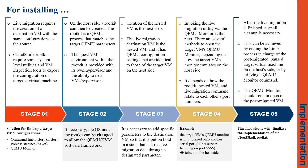Then, a rootkit can be created. The guest VM environment within a rootkit is provided with its own hypervisor and the ability to nest VMs. If necessary, the OS under the rootkit can be changed. The third step is creation of a nested VM. The live migration destination VM is nested, and specific parameters must be appended so that it is paused in an incoming state and listening for migration data. The fourth step is invoking the live migration utility using the QEMU monitor. There is a simple method to open the target VM's QEMU monitor depending on how it is emulated. For example, if the target VM's QEMU monitor is multiplexed on a serial port, such as a telnet server listening on a special port, then telnet on the host side could be involved to open it.